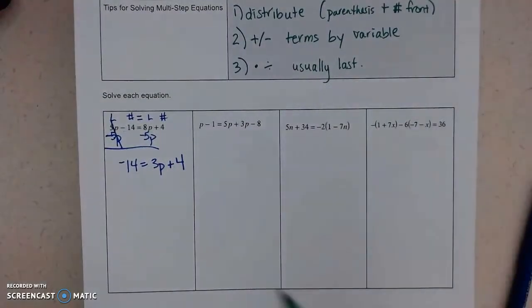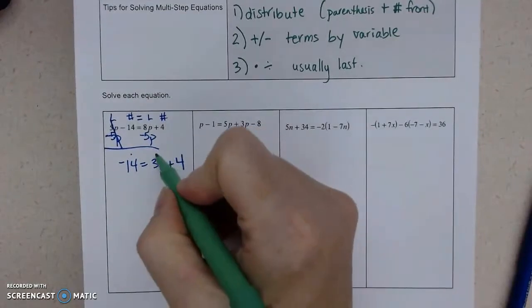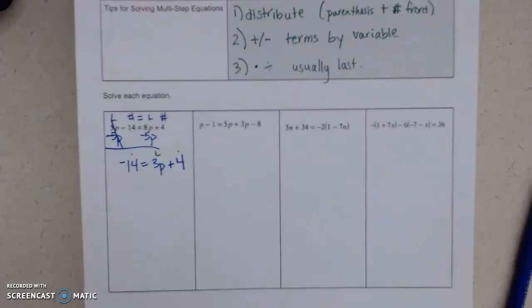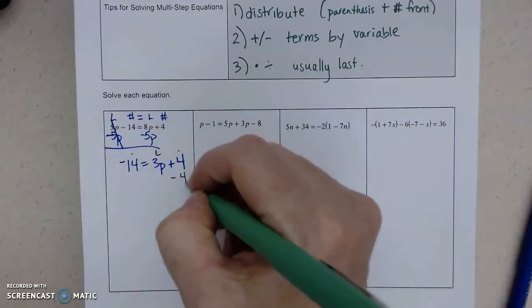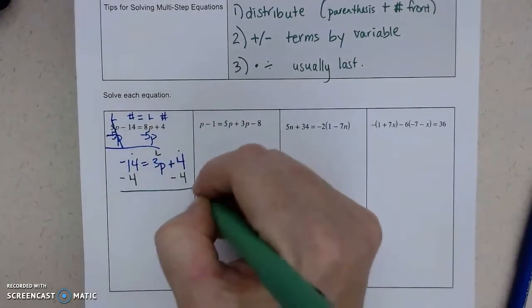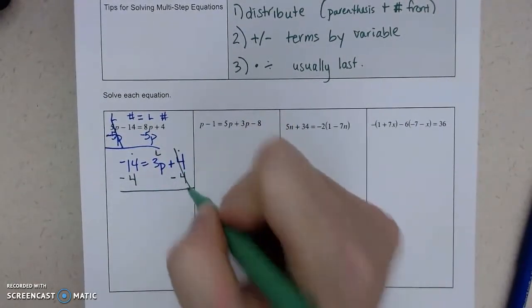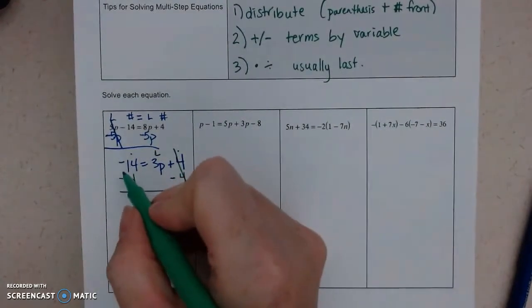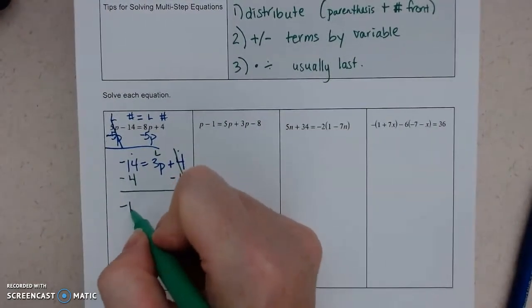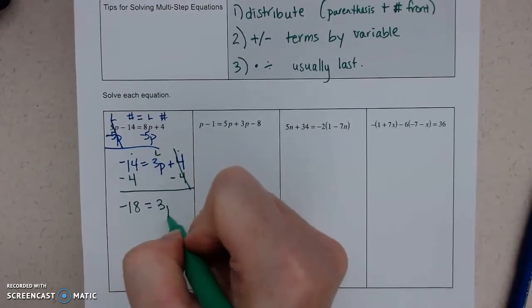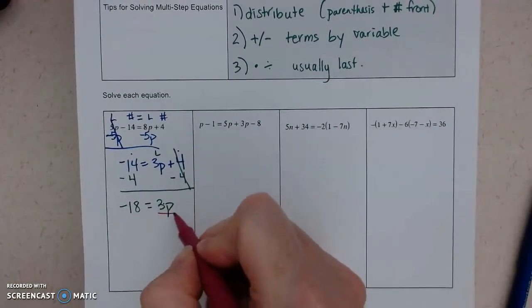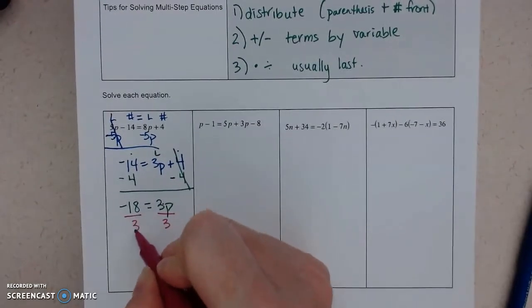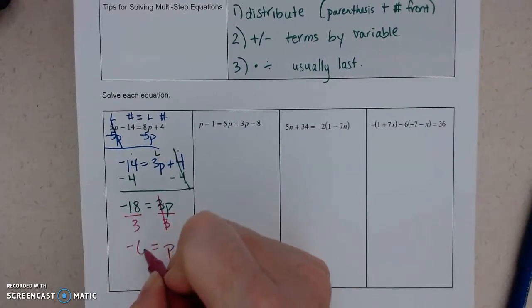All right, so now I've got a number, a letter, and a number. So my letters are on the right side, so I have to move my numbers to the left side. So I have to move the 4. The inverse is to subtract 4. So 4 minus 4 does cancel, so I know I did it correctly. Negative 14 and negative 4 is negative 18. My last step, the 3 and the P are being multiplied, so the inverse is to divide. So P equals negative 6.